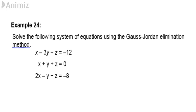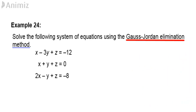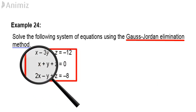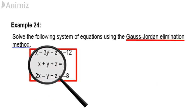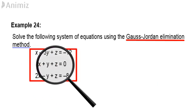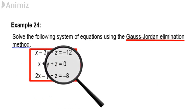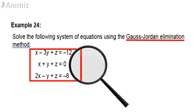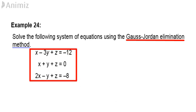Example 24. Solve the following system of equations using the Gauss-Jordan Elimination Method. x minus 3y plus z equals negative 12, x plus y plus z equals 0, and 2x minus y plus z equals negative 8.